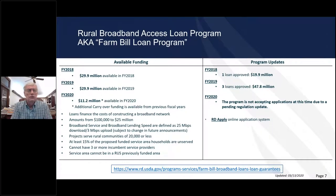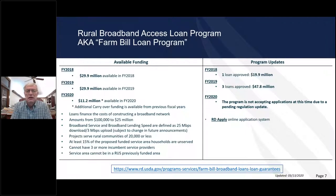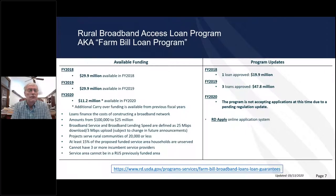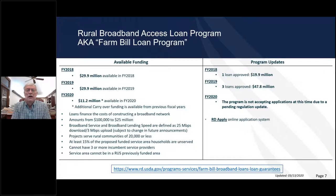We have another program through the Farm Bill. It's currently under revision and applications are not being accepted. There's currently around $100 million in the hopper for when that program comes out — it may be late this calendar year before there's even an application period. That program can be very effective for areas not served by an independent telephone company, though an independent telephone company could also take advantage of it.